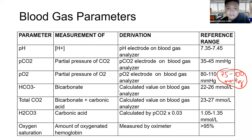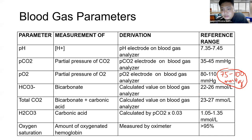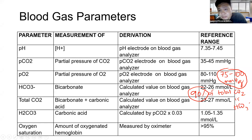For bicarbonate, it would be 22 to 26 mmol/L. For total CO2, 23 to 27. Notice that the normal values of bicarbonate and total CO2 are very close — only one unit apart — because 90% of your total CO2 is bicarbonate. This has been asked in board exams before. Remember the 90%.